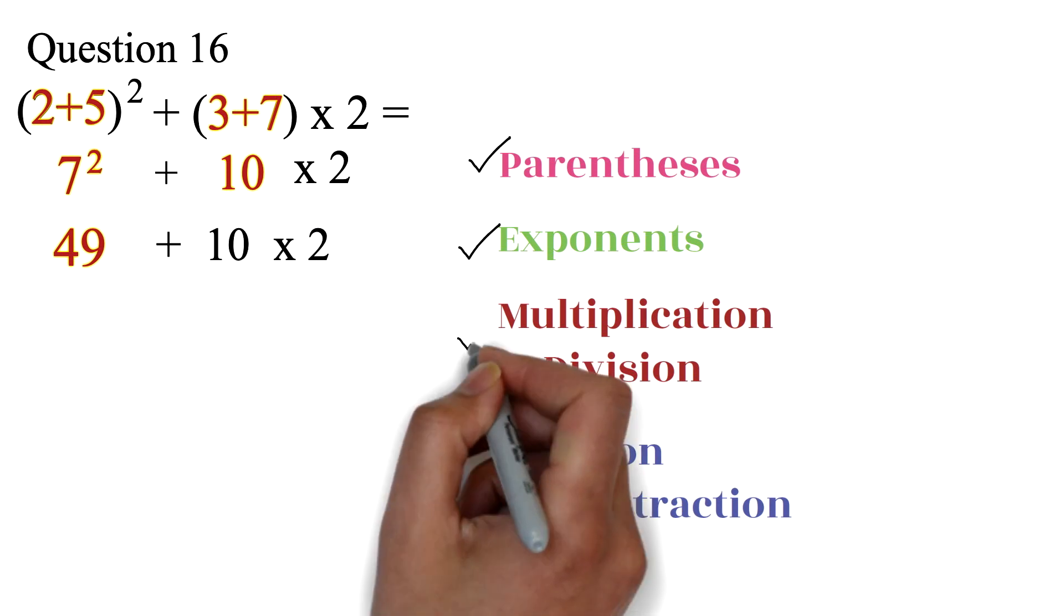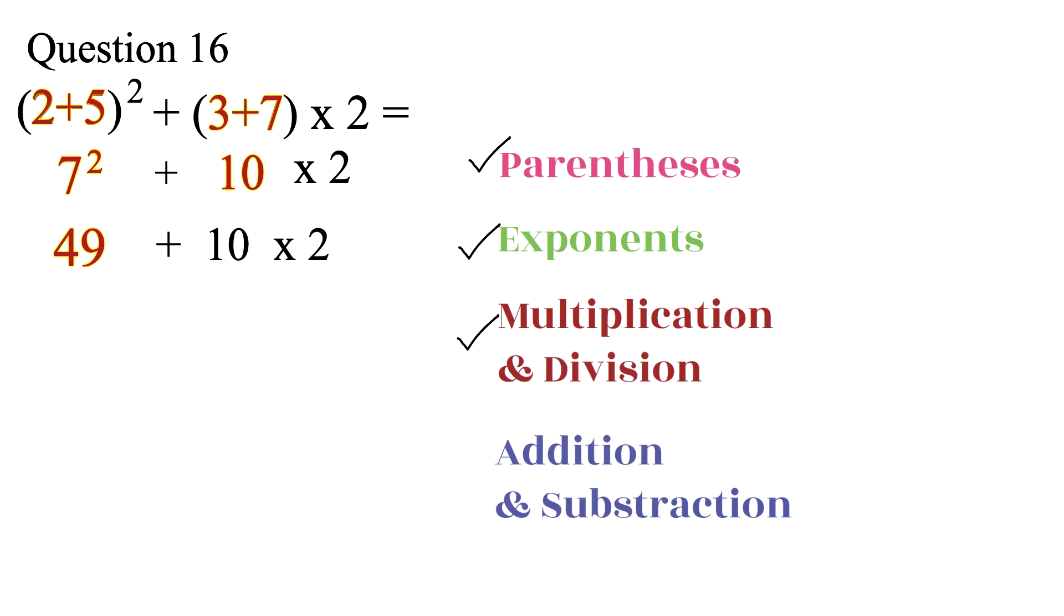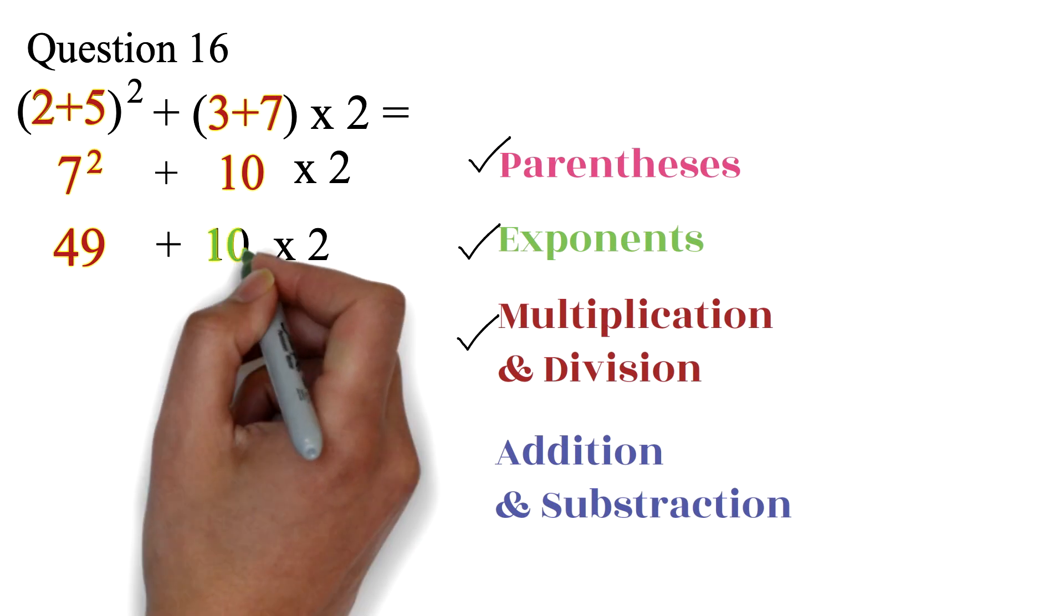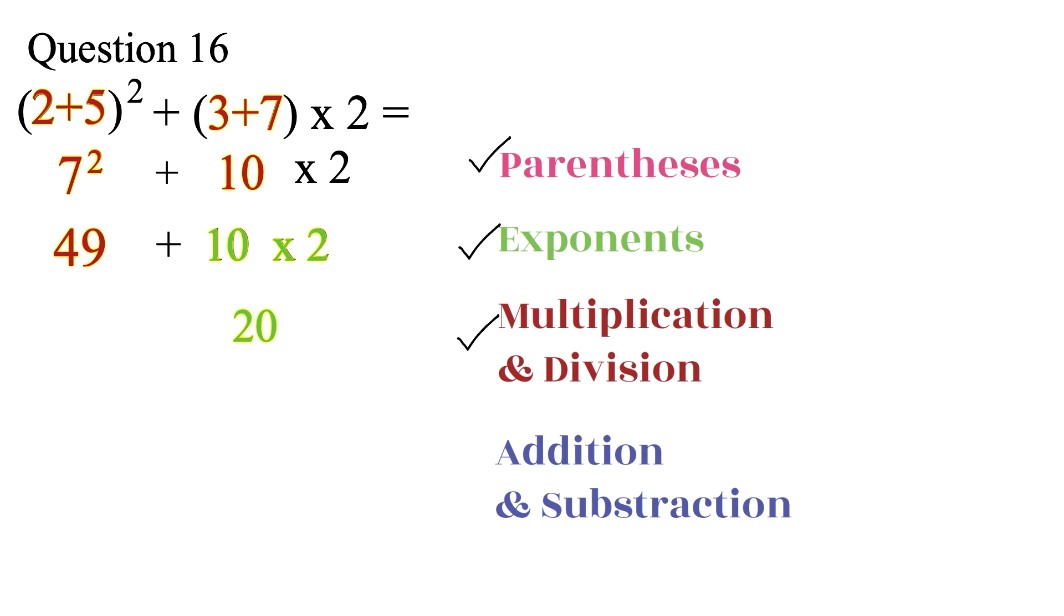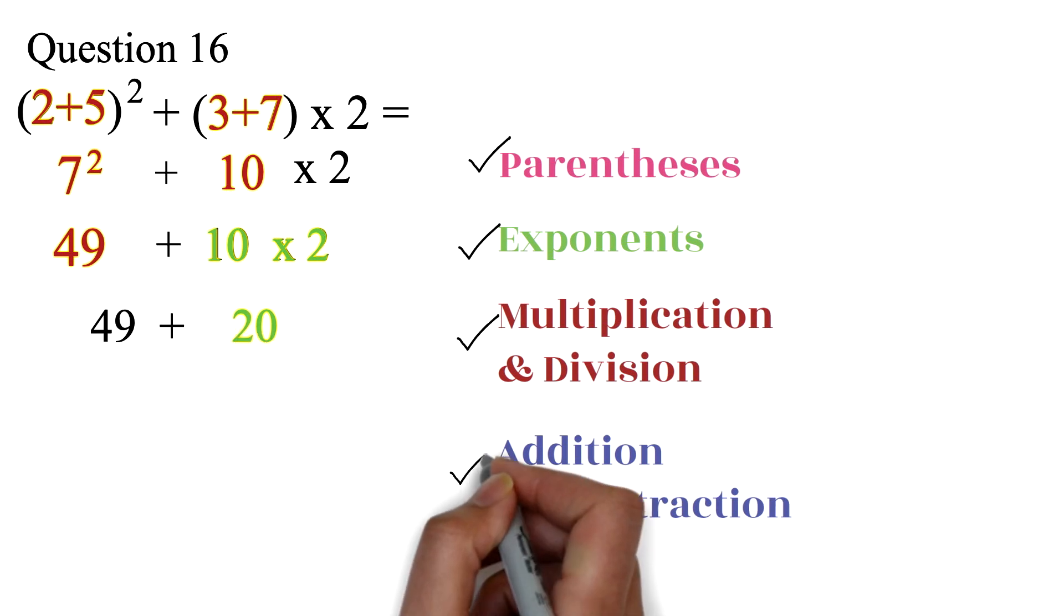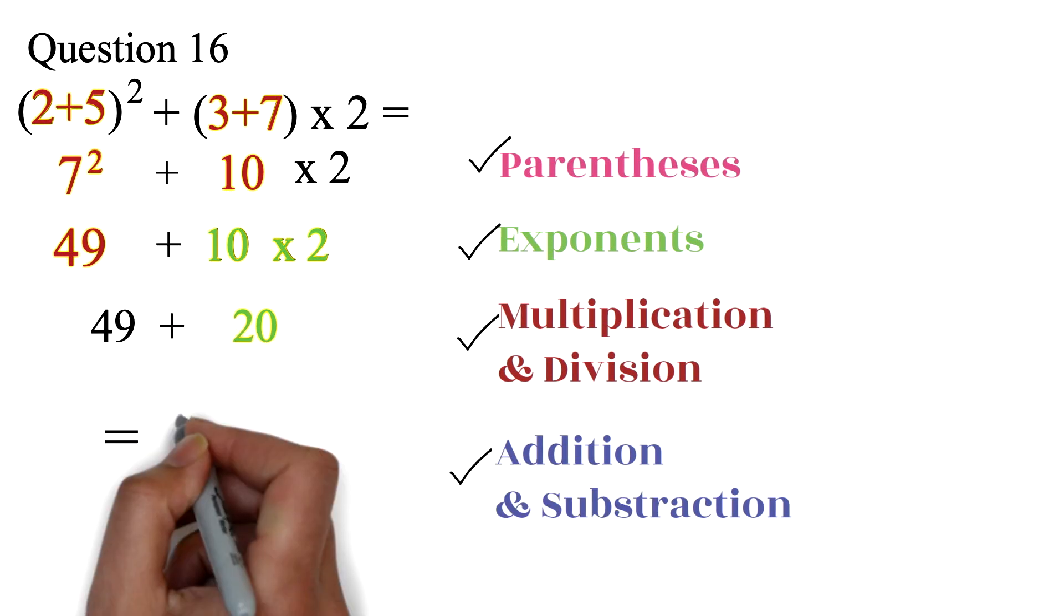Next, we have to do the multiplication or division. We have multiplication, so we will do 10 times 2, to get 20. So, finally, we have 49 plus 20. This will give us 69.